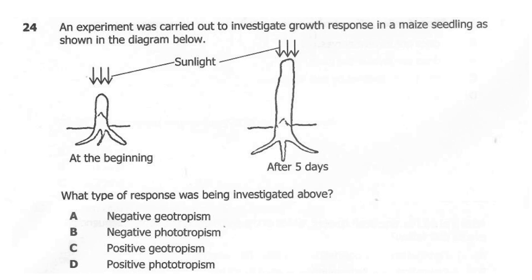Question 24. An experiment was carried out to investigate growth response in maize seedlings. What type of response was being investigated? A: negative geotropism. B: negative phototropism. C: positive geotropism. D: positive phototropism. The correct answer here is D, positive phototropism, because the shoot is growing towards the direction of sunlight. Since the shoot is growing towards light, it is positive phototropism.